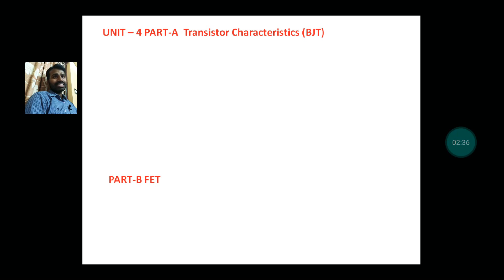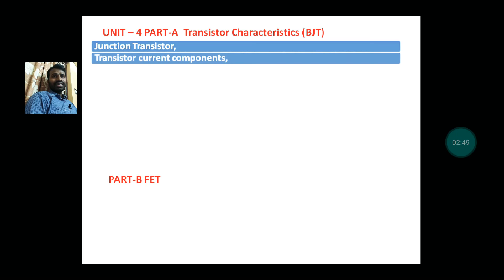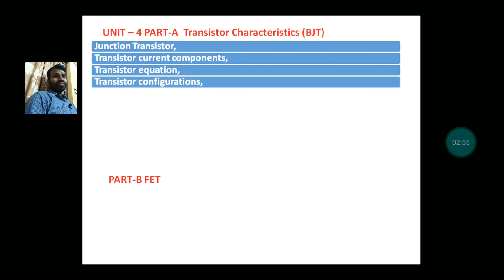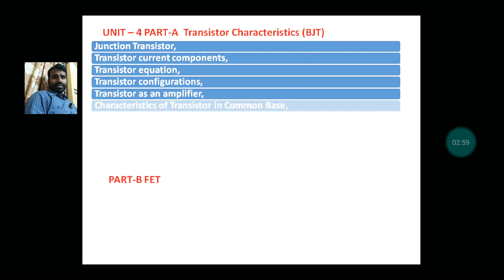Fourth unit is two parts: Part A, Transistor Characteristics (BJT); Part B, Field Effect Transistor. In Part A, topics are junction transistor, transistor current components, transistor equation, transistor configurations, transistor as an amplifier, characteristics of transistor in common base, common emitter, and common collector configurations.